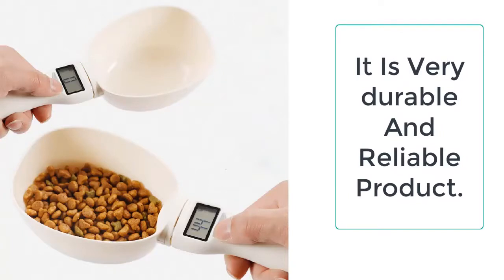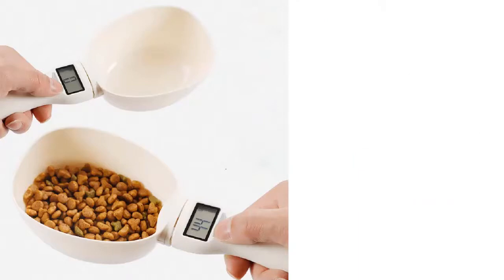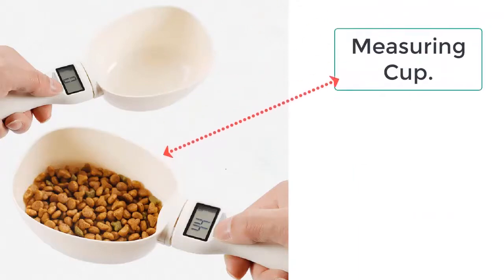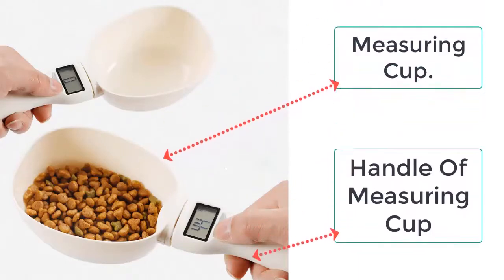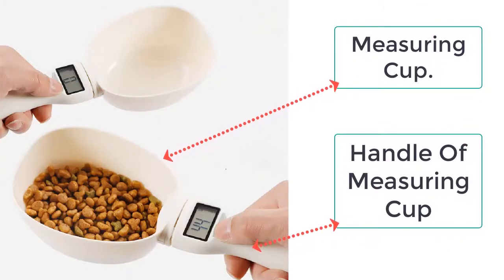This dog food measuring cup also features a spoon which can be easily detached when needed. You can detach the spoon to clean or wash it and make it safe, healthy, and hygienic for the dog.